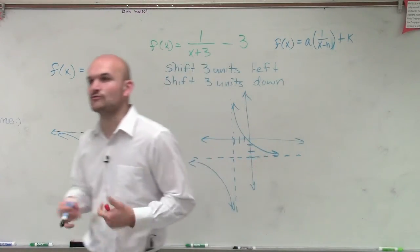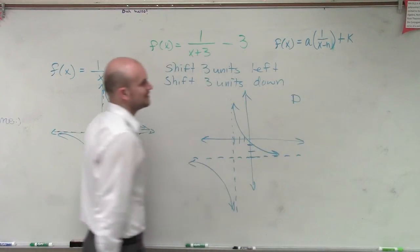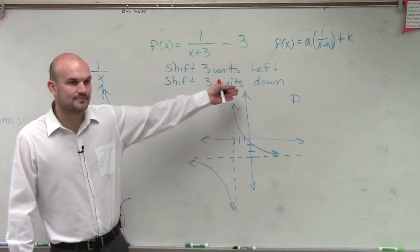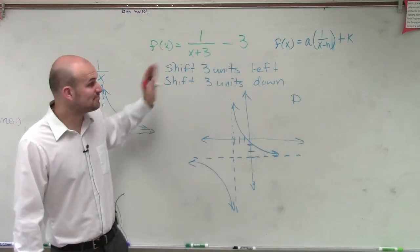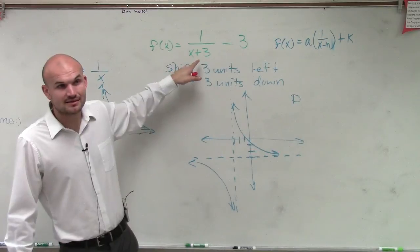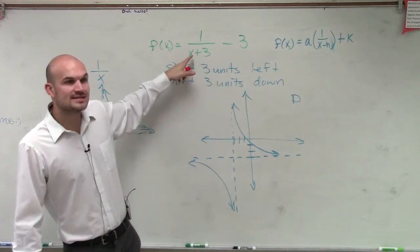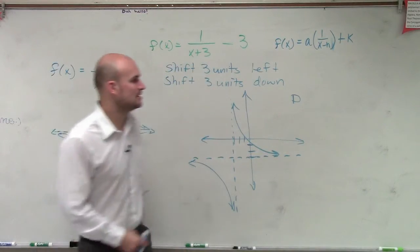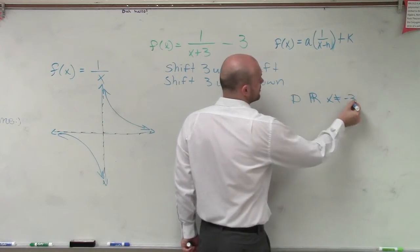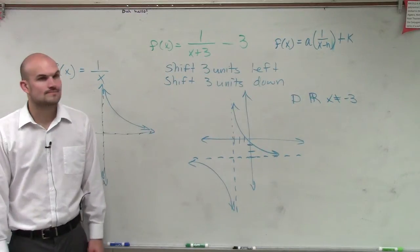However, they do ask us to find the domain and range. So the domain for this function is we need to look at this and say, what are all the possible numbers that we can plug into this value or to this equation? Well, we can plug in all possible numbers, except the only number we cannot plug in is when x equals negative 3. The reason being is when x equals negative 3, my denominator is now 0. So I can say my domain is all real numbers, except x cannot equal negative 3.